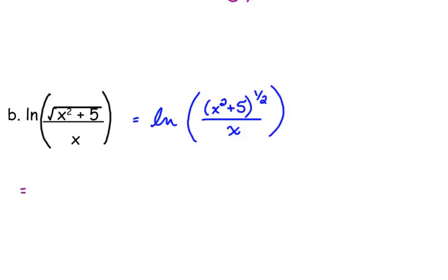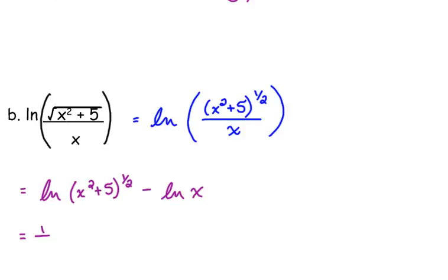Now let's expand the logarithm. It's the natural log, but that's okay — we can use these properties with any of our logarithms. The natural log of a quotient is the difference of two natural logs, with the top one going first. So I've got the natural log of x squared plus 5 to the one-half, minus the natural log of x. Then I can bring the one-half in front using my power rule. I keep x squared plus 5 in parentheses so it's clear that both terms are inside the natural log.